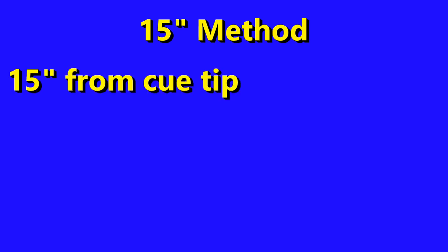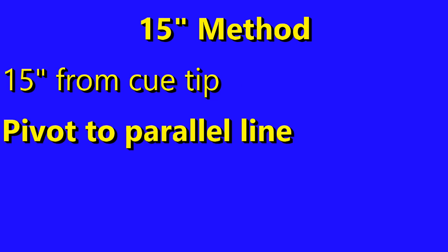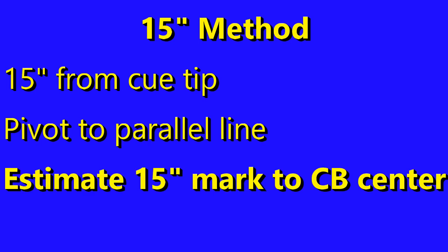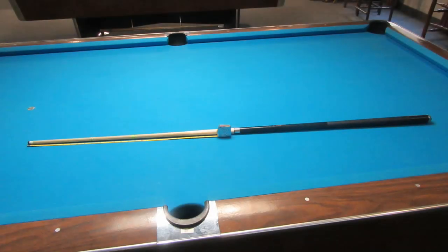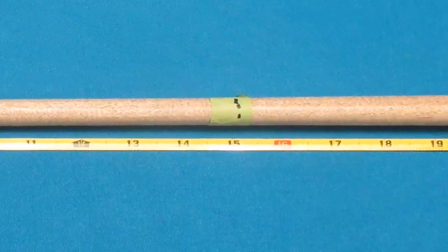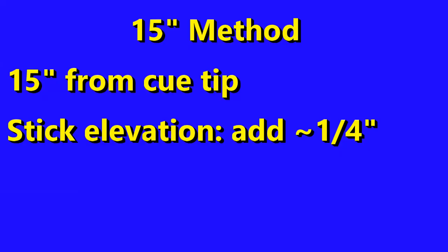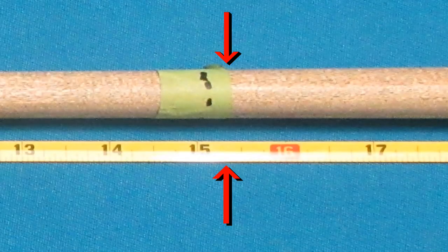A final cue stick technique: instead of using a point near the butt 57 inches from the tip, we'll use a point only 15 inches from the tip, and the arc just goes to a line parallel to the ball-to-pocket line. For an arc with a 15-inch radius, each quarter inch corresponds to approximately one degree. To use this technique, you'll need to place a mark 15 inches from the tip or use painter's tape. You need to touch the tip 15 inches past the base of the cue ball; if elevated to clear the cue ball, you would need a point about 15.25 inches from the tip to be over the center of the cue ball.